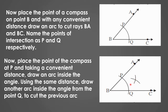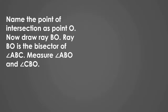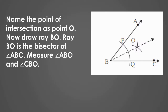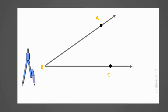Here you can see ray BO. Ray BO is the bisector of angle ABC. Measure angle ABO and angle CBO to verify they are equal.